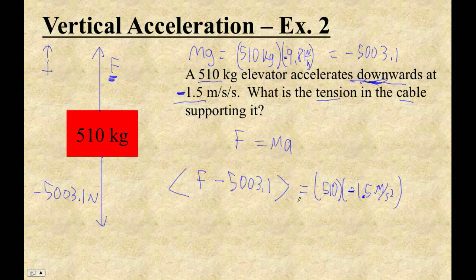So now let's bust this out. 510 times negative 1.5 is negative 765 equals F minus 5003.1, and then we're going to add this to both sides. So plus 5003.1, and I get 4238.1.